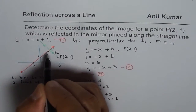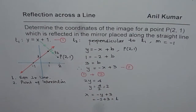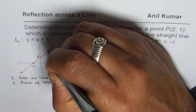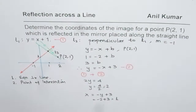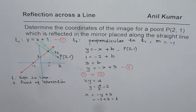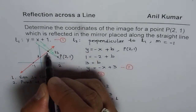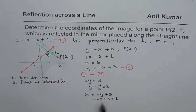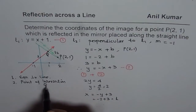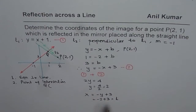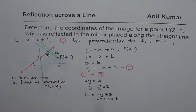Let me correct my drawing a bit — that becomes more reasonable. That gives me the point, and I'm calling this point Q. So we found the point of intersection, and that is Q for us: x is 1, y is 2 — that is the point of intersection.